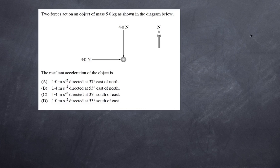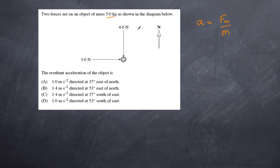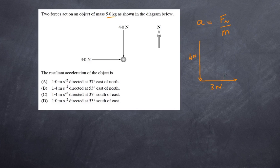This question is all about Newton's second law, which states that acceleration depends on the net force acting on the object and on the mass of the object. We are given the mass of five kilograms, but we haven't yet worked out the net force. The object is experiencing two forces and we need to find the net force. To add those two forces together, we need to do a vector diagram.